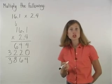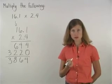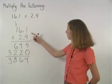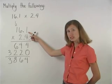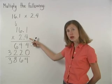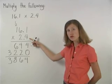Our final step is to determine where the decimal point goes in our final answer. Notice that since there's one digit to the right of the decimal point in 16.1 and 1 digit to the right of the decimal point in 2.4,